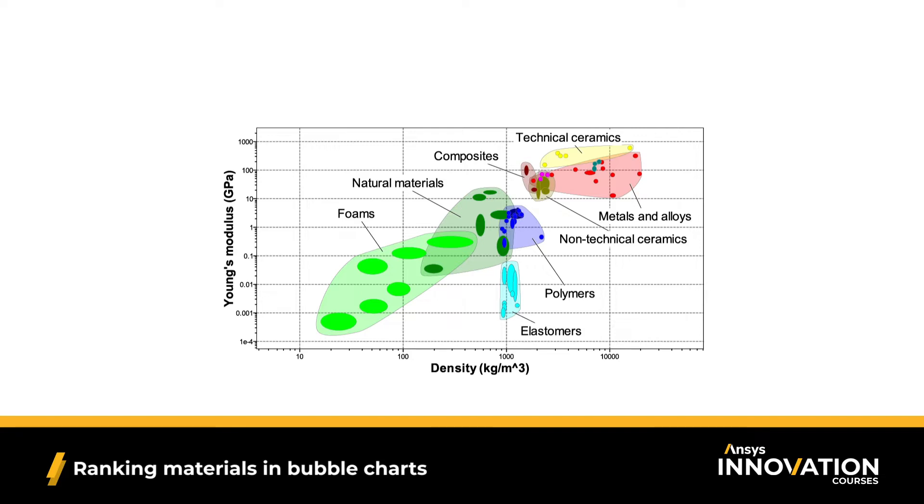We can think about this chart in four quadrants. So if we start in the lower left corner, we can see materials that have low stiffness and low density. Makes sense we're seeing our foams, particularly polymeric foams, in this corner. Again, depending on our design criteria, we either want to focus on this quadrant or avoid it.